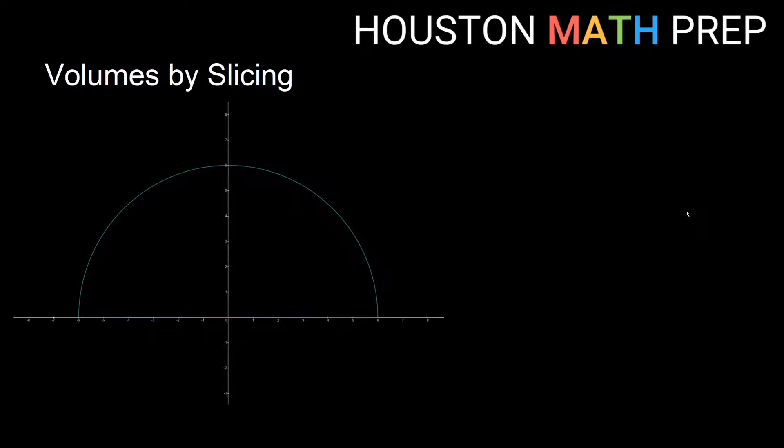So here I've got two curves, some region that's bounded by these curves. The bottom is just the x-axis, y equals 0, and this top is an upper semicircle, y equals the square root of 36 minus x squared, so it's a semicircle with radius 6.